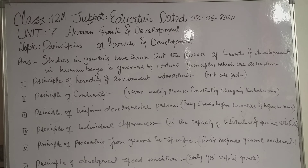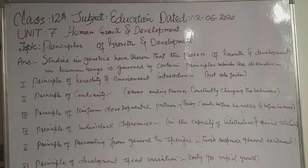Human beings are constantly changing in behavioral patterns due to interaction with the environment. Number three: the principle of uniform developmental pattern. Development occurs in an orderly manner and follows a certain sequence and a regular step-by-step process. For example, the baby crawls before he walks, walks before he runs, babbles before he talks, and speaks single syllable words before he speaks complete sentences.